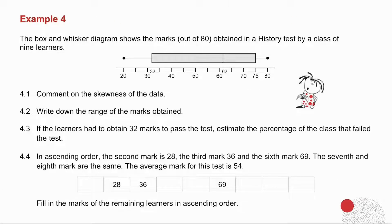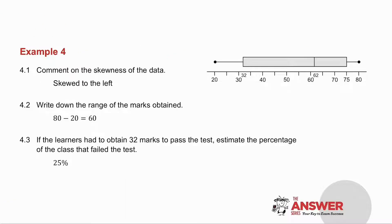Example number 4. I want you to pause the video, try this yourself and then we will do it together. 4.1 comment on the skewness. You will notice it's more spread to the left. So the data is skewed to the left. 4.2, the range of the marks. The highest mark is 80. The lowest mark is 20. So there I have the range.